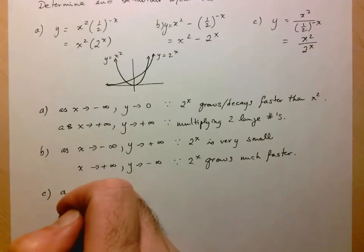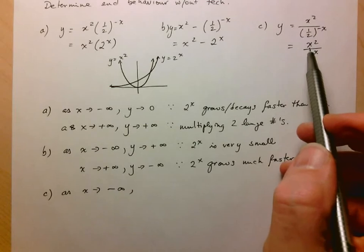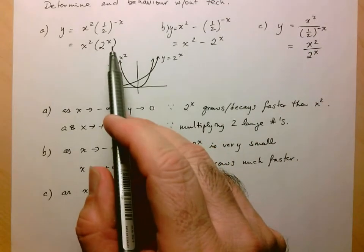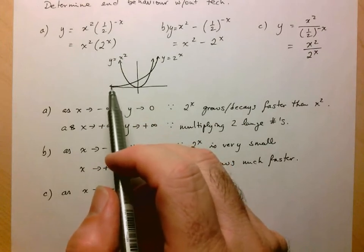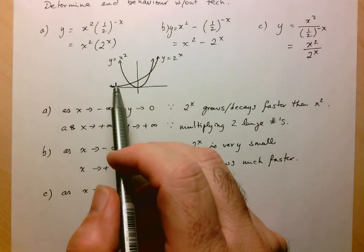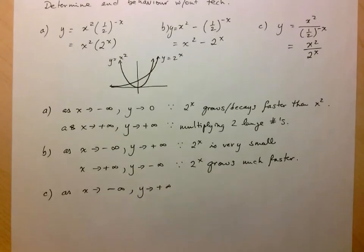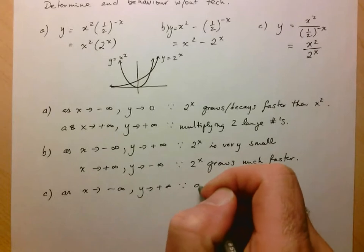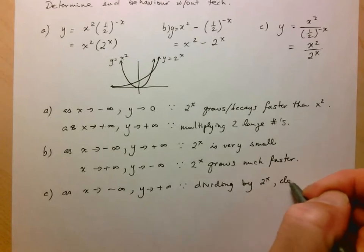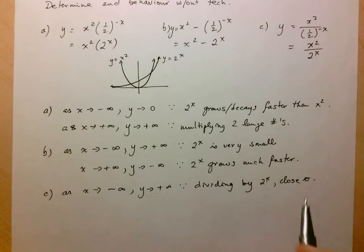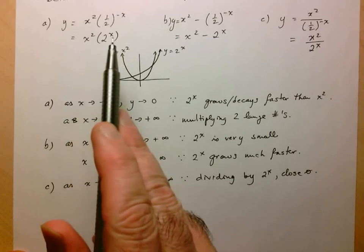Let's take a look at Part C. As x approaches negative infinity, I have x squared as a really big number and I'm dividing by a really small number close to zero. When I divide by something close to zero, it ends up making the number even larger. So y is still going to be approaching positive infinity, since dividing by 2 to the x — which is close to zero — like 0.0001, is going to make my original number even larger.